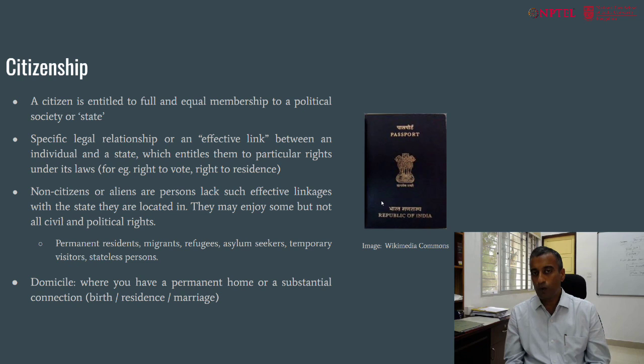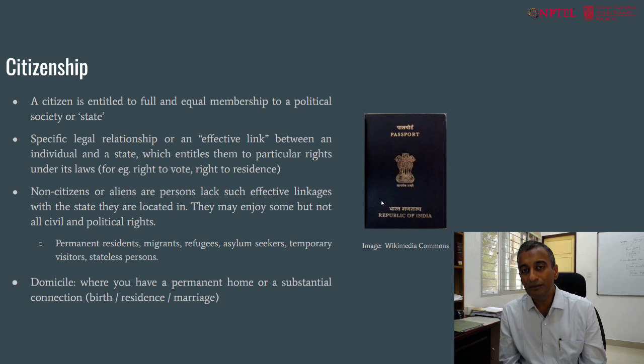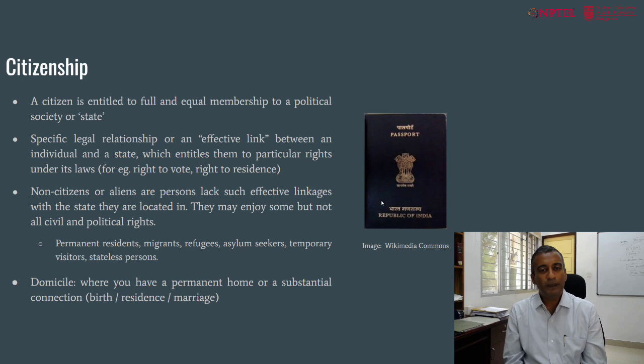Once you establish that effective link, you can be entitled to some political rights, including the right to vote and the right to residence. What kind of link should be treated as an effective link? At the lowest level, residence may be enough. At a much higher level, one might insist that someone needs to pay taxes or have property in order to be a citizen. Modern political societies set lower requirements for achieving citizenship, but as we will see when we discuss more controversial questions, this is not always obvious or settled.